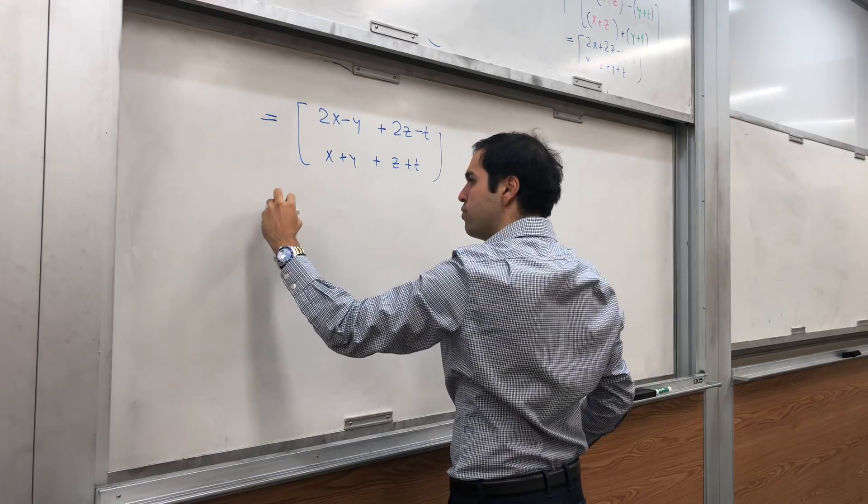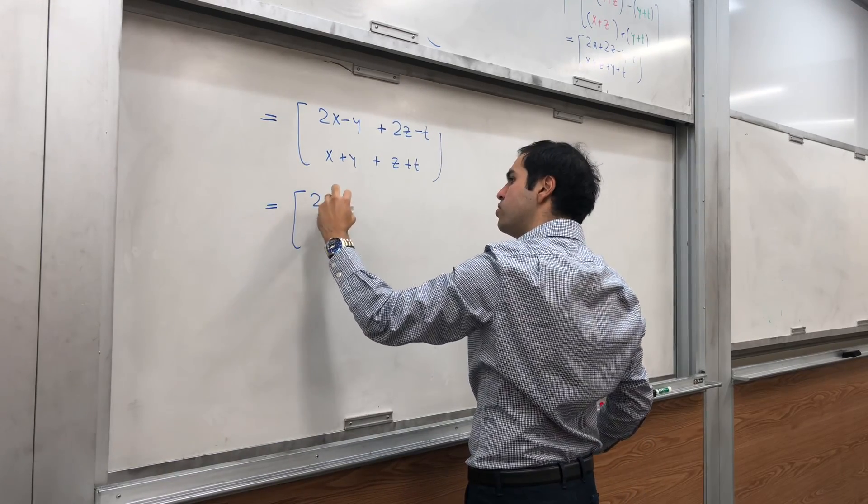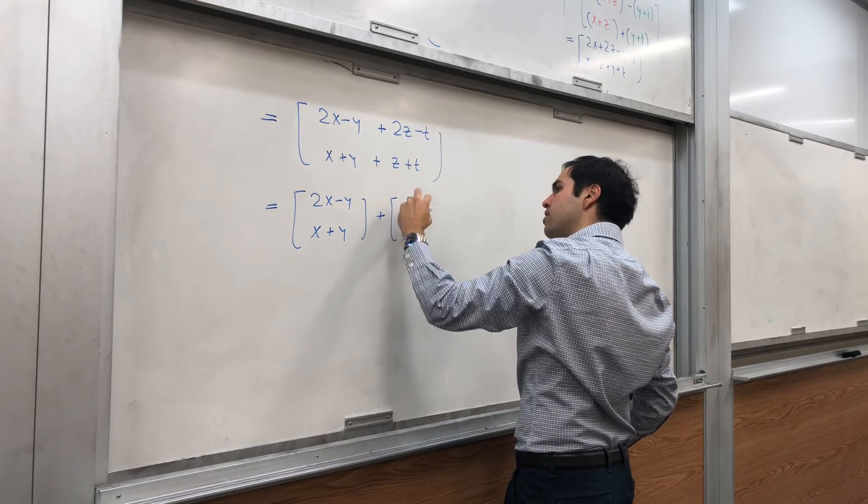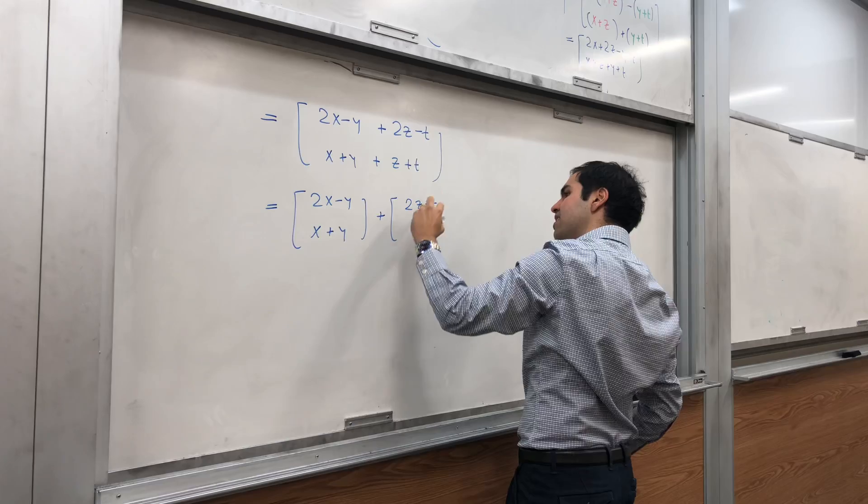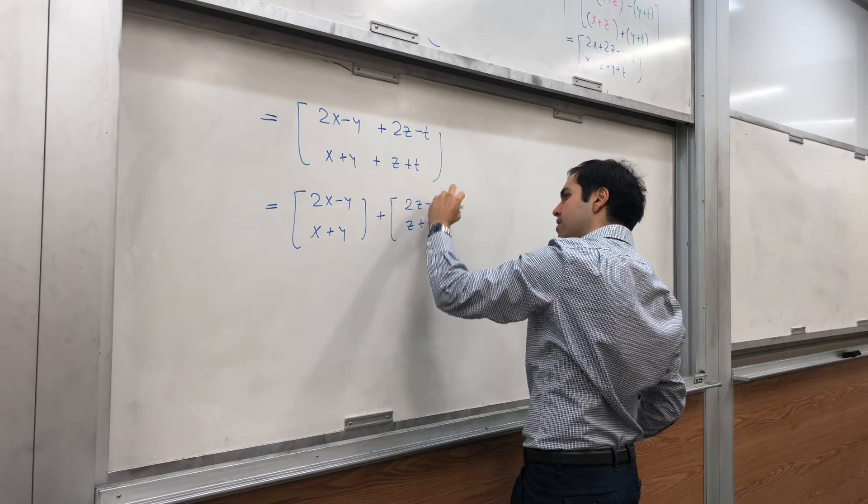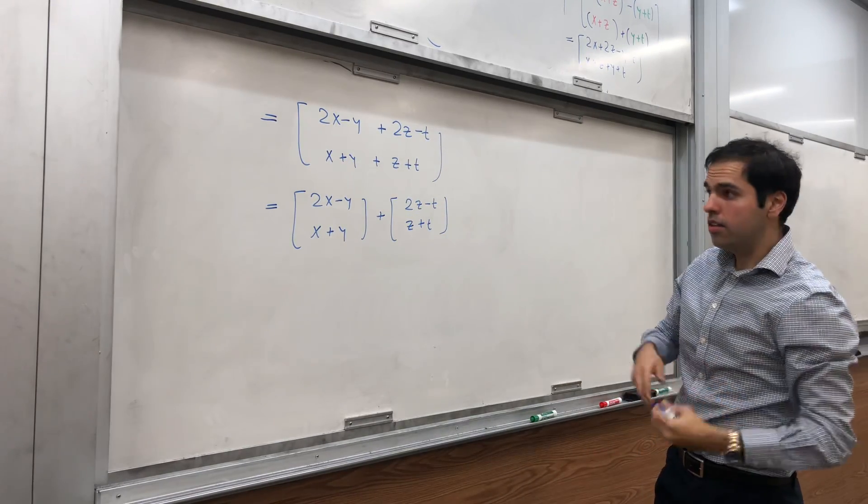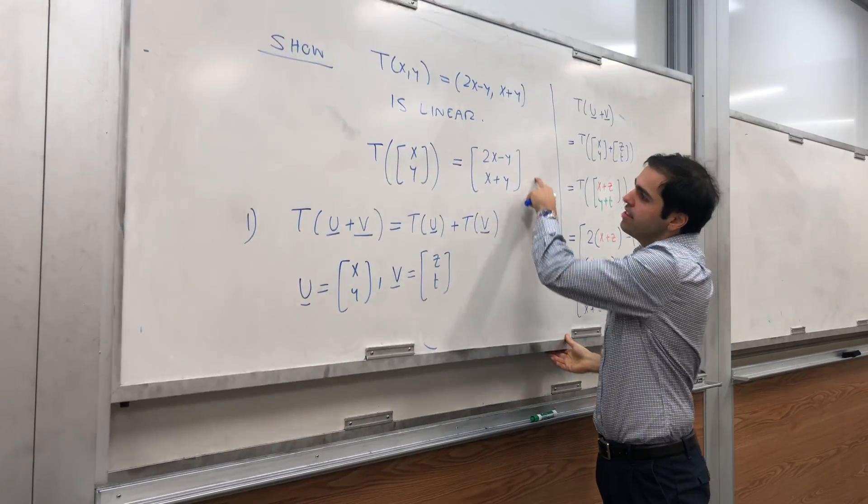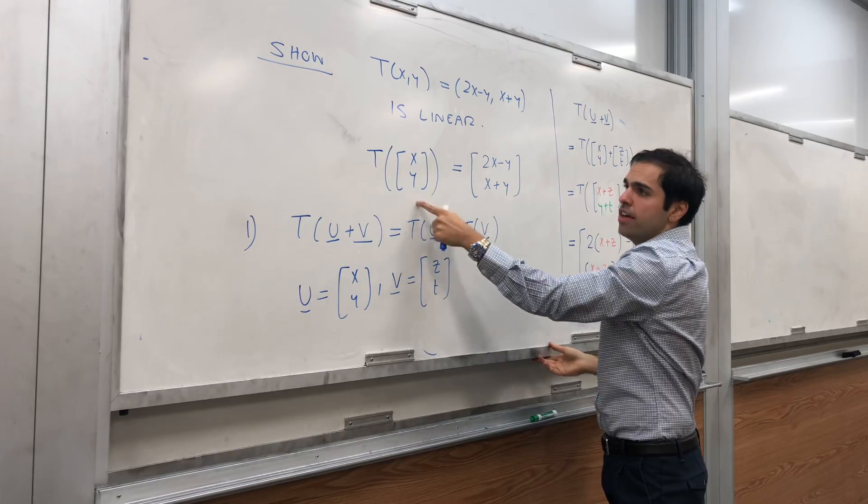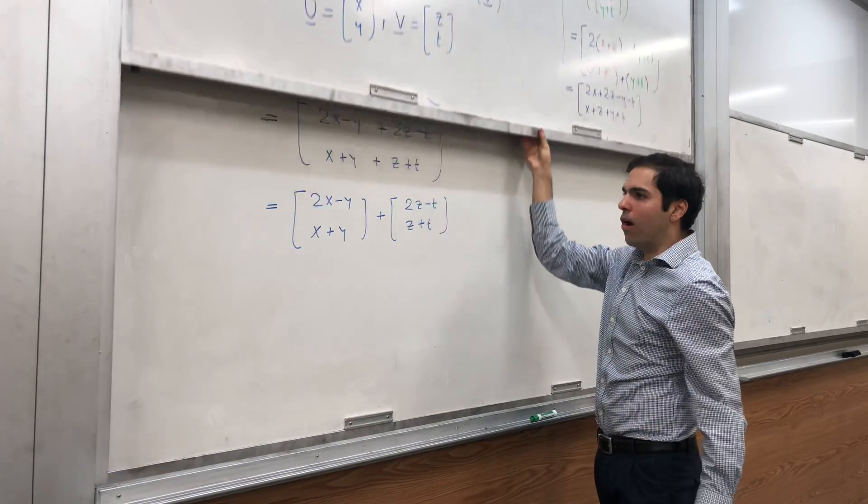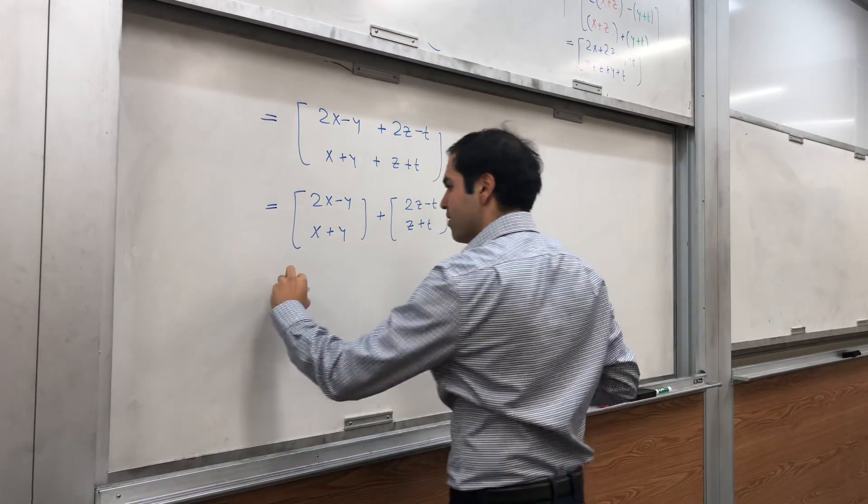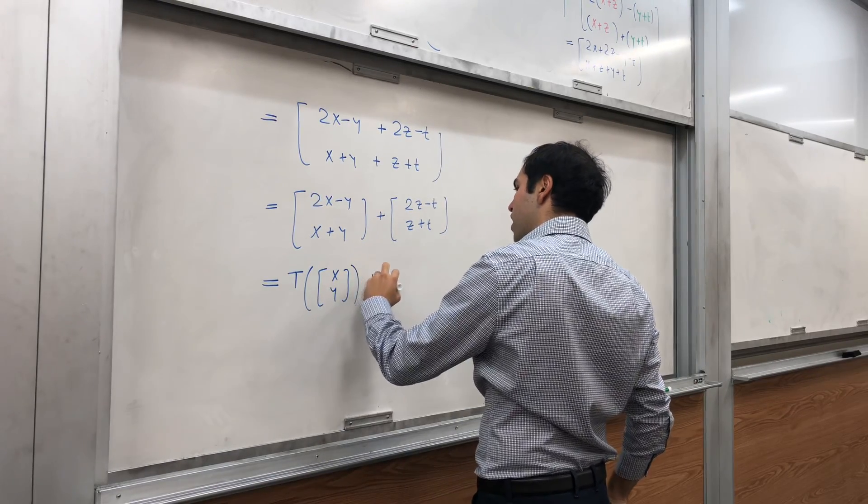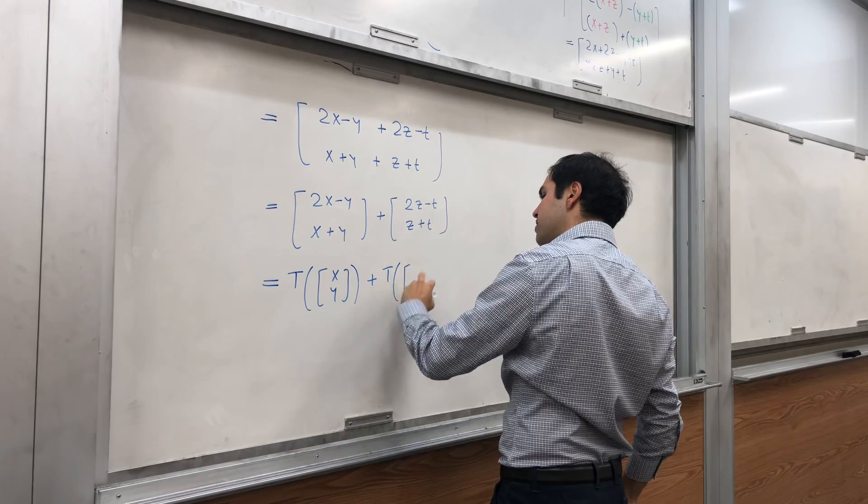Why is that useful? Notice, this is (2x - y, x + y) plus (2z - t, z + t). And if you use this awesome definition I gave you, notice this quantity that we have is just T(x, y). So that is T(x, y) + T(z, t).